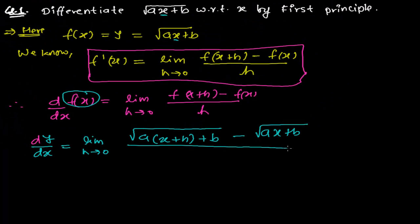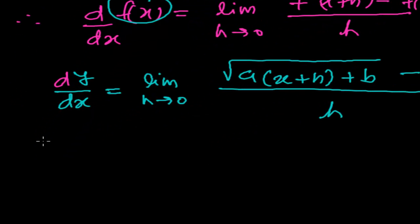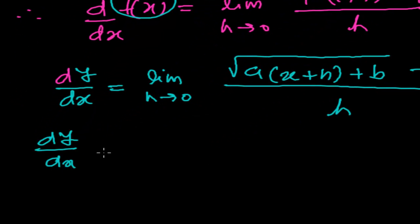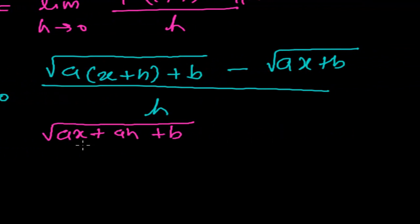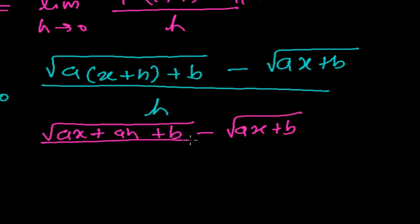So again, dy by dx equals the limit as h tends to 0 of root over ax plus ah plus b, minus root over ax plus b, whole divided by h. Now how do we solve this kind of problem?